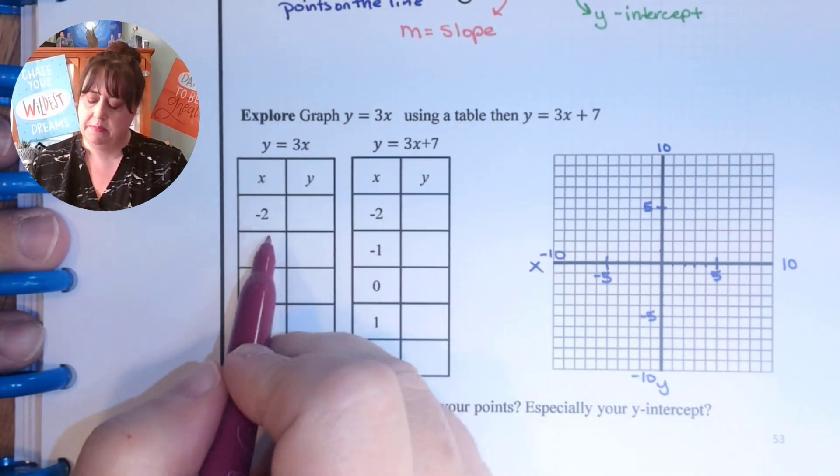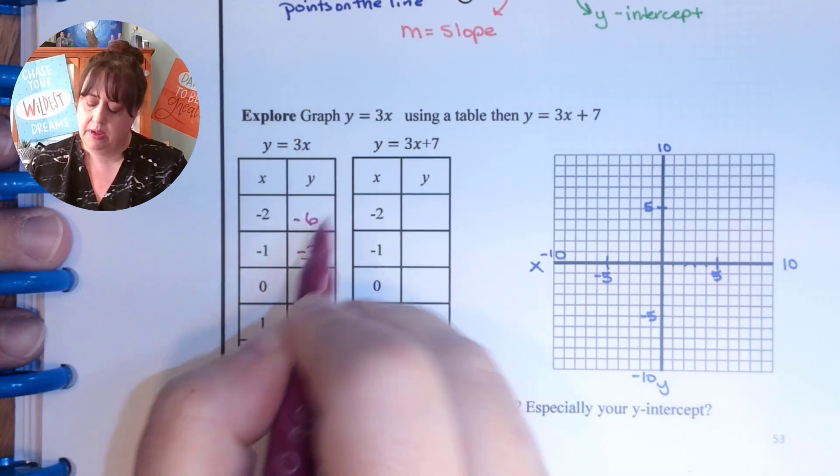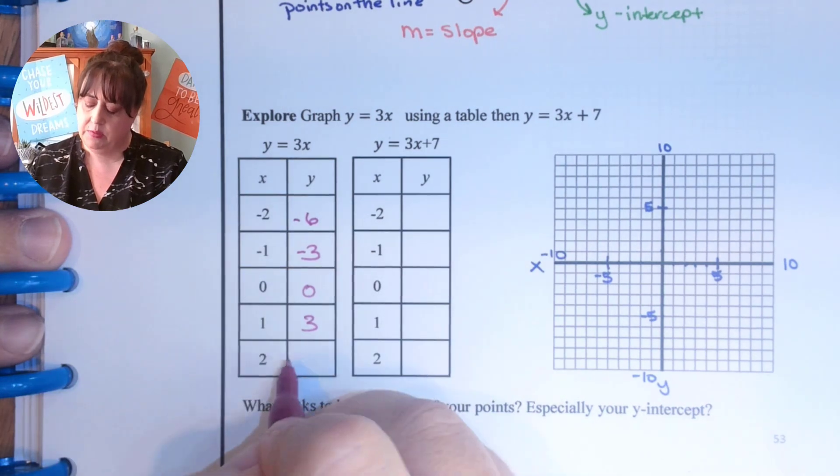When it's negative 2, 3 times negative 2 is a negative 6, 3 times negative 1 is a negative 3, 3 times 0 is 0, 3 times 1 is 3, and 3 times 2 is 6.